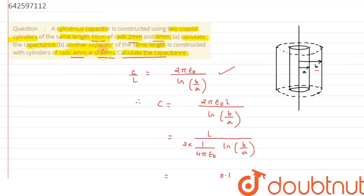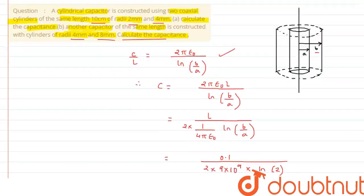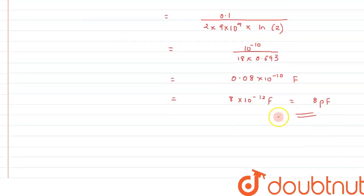So again as we can see, outer radius and inner radius, the ratio still remains the same, that is 2 only, so we can write the capacitance value will be the same.